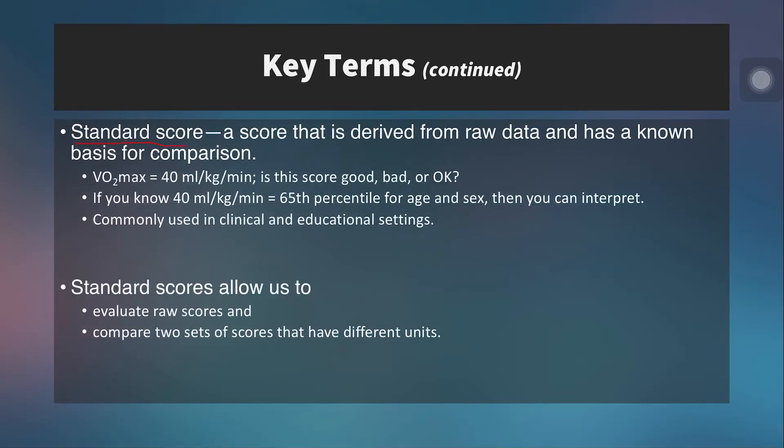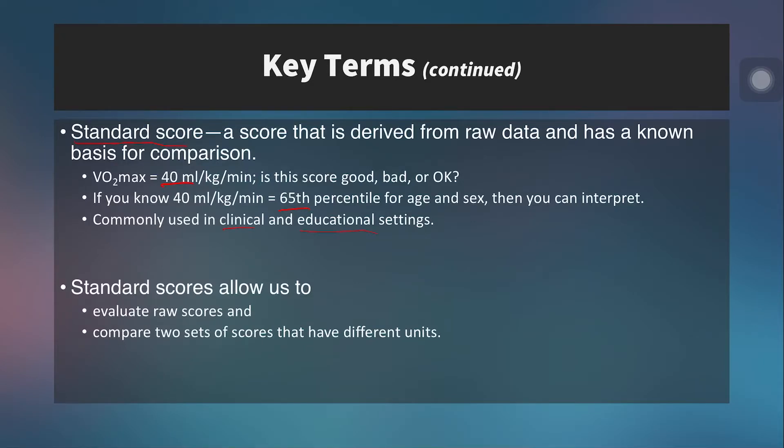A standard score is derived from raw data and has a known basis for comparison. Take a VO2 max of 40 milliliters per kilogram per minute — is that good, bad, or okay? Those with exercise physiology background know it's about average, maybe slightly below average for males. But if you know that score is in the 65th percentile for that person's age and sex, you can tell them they're above average, above 50%, and that 65% is fairly good with room for improvement. Percentiles are commonly used in clinical and educational settings to give clients, patients, and students a clear gauge of how they rank.